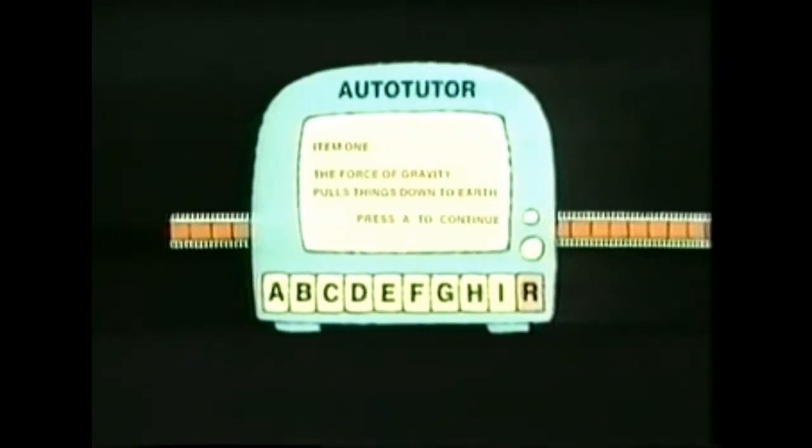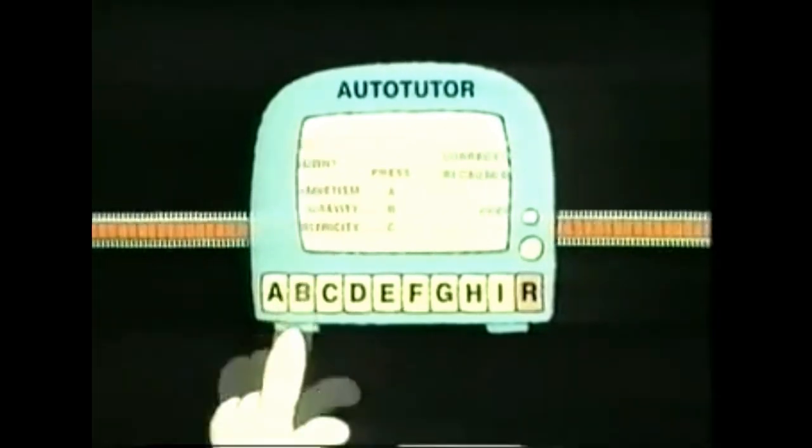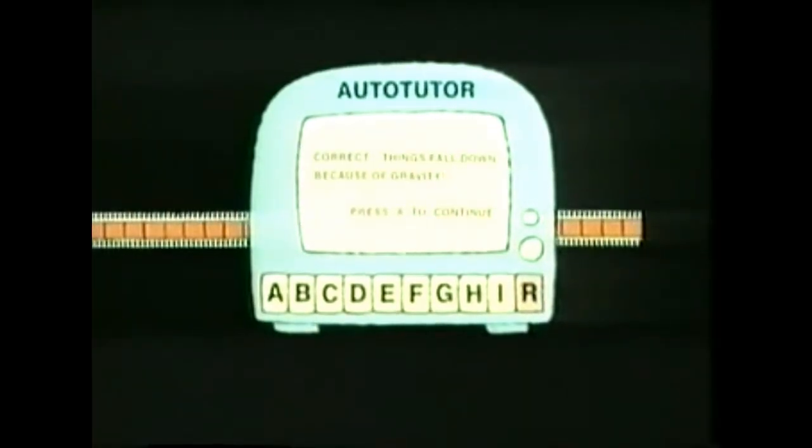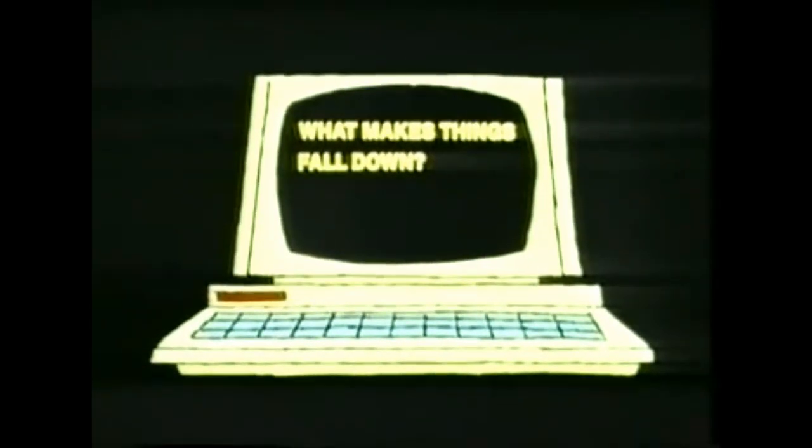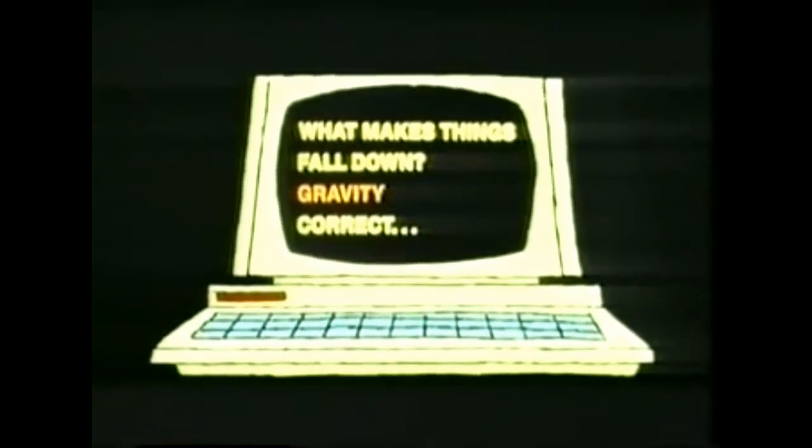Programmed instruction was born — a first attempt at an automated tutorial. But the programmed textbook was awkward to use and involved a lot of page turning. So in the 1960s, the teaching machine was invented to turn the pages mechanically, so to speak. But these machines were pretty cumbersome. So in the 1970s, when the computer became cheap enough to be used in schools, it took over the role of the teaching machine and turned the pages electronically, in a sense.